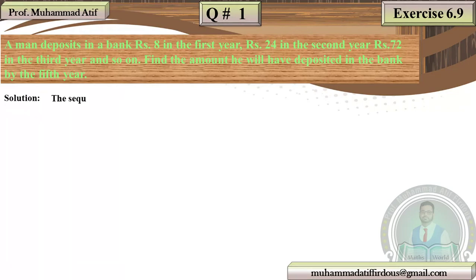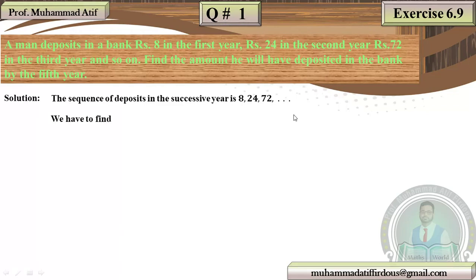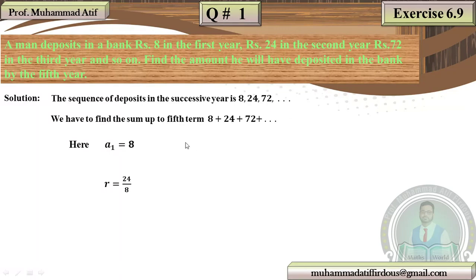So first we build the sequence: 8, 24, 72, and so on — this is a geometric sequence. We need to find the sum of 5 years. A1 is 8. R: divide the second term by the first — you get 3, which is greater than 1. We need to find S5.